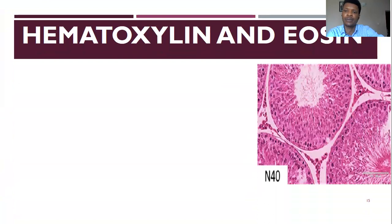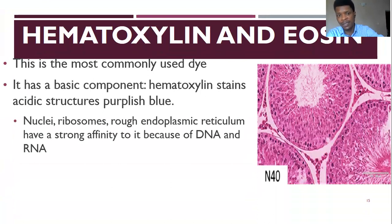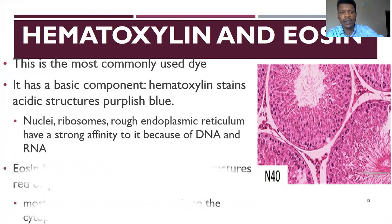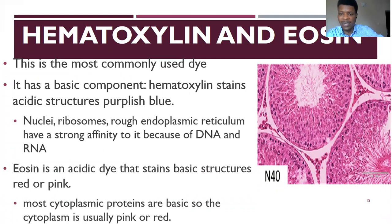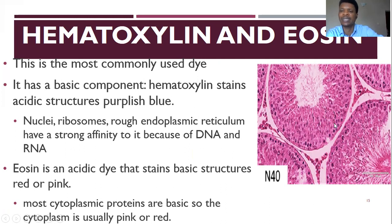Now let's look at hematoxylin and eosin stain — this is the most popularly used stain. It has two components: both a basic part and an acidic part. The hematoxylin represents the basic dye component of this stain. It stains the nucleus, endoplasmic reticulum, and ribosomes, which are rich in nucleic acids, staining them blue or sometimes purplish-blue. The acidic part is the eosin, which stains the cytoplasm pink or red at times. This picture here is a testicular tissue showing you the nucleus stained blue and the cytoplasm stained pink — that's a typical example of H&E stain.